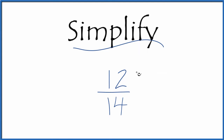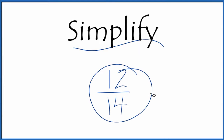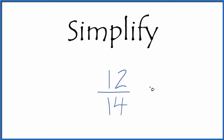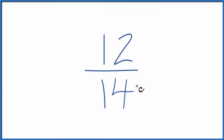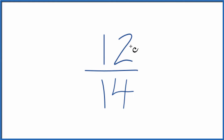Let's simplify the fraction 12 fourteenths. We're looking for another fraction that's equivalent — it has the same value as 12 divided by 14 — just that we've simplified it or reduced it to its lowest terms. To do that, we need to find a common factor, something that goes into 12 and 14 evenly.